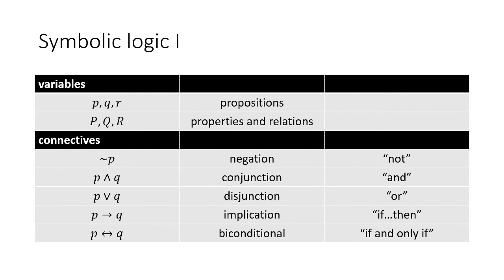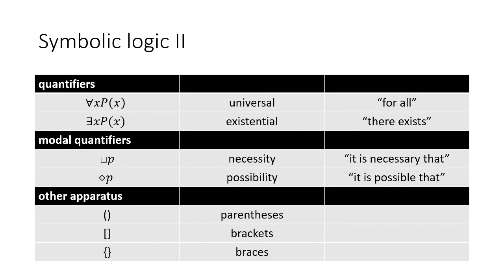The situation gets a bit more complicated because we also have quantifiers that mean 'for all' and 'there exists.' The first quantifier is called universal and the second existential — the symbols are an inverted A and an inverted E. There are also modal quantifiers in contemporary logic that mean necessity and possibility: the square P means 'it is necessary that P,' and the diamond P means 'it is possible that P.' There's also other apparatus in symbolic logic like parentheses, brackets, and braces.